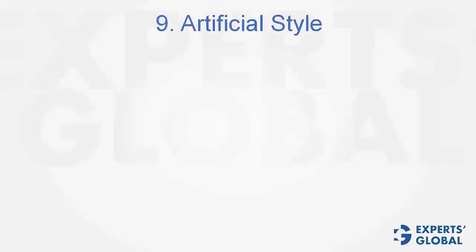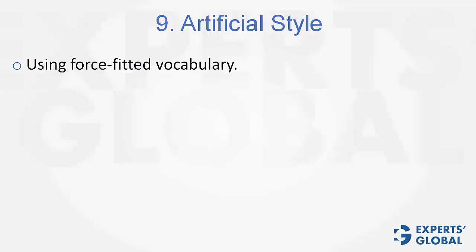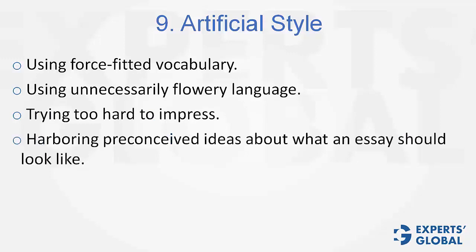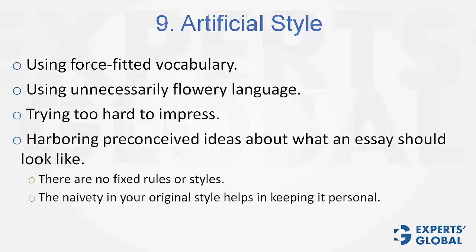The next two mistakes are around style of writing. Mistake number 9 is artificial style — writing in a way that is not natural to you, using force-fitted vocabulary, unnecessarily flowery language, and trying too hard to impress. This generally happens out of a preconceived idea about how MBA essays should look. The fact is that there are no fixed rules or styles. The content needs to be impactful, and your natural, original style of writing will make your essay look personal — that works in your favor. Don't lose that.